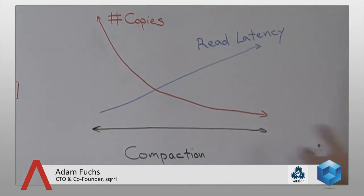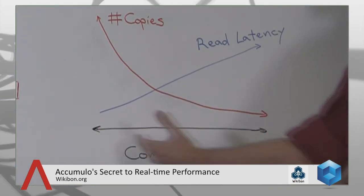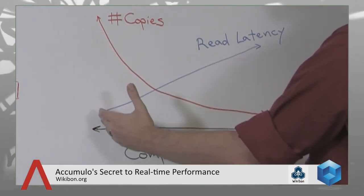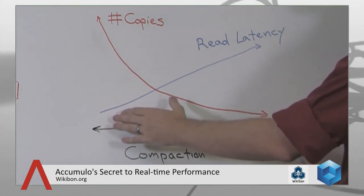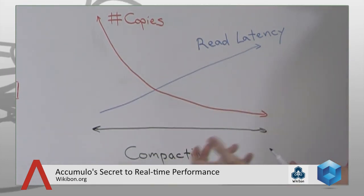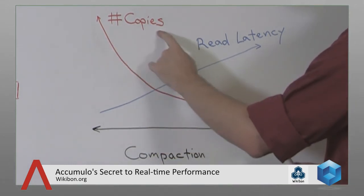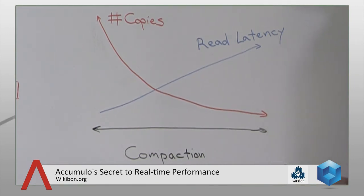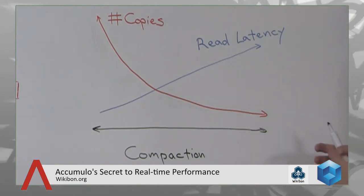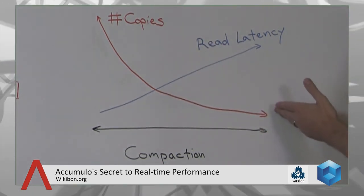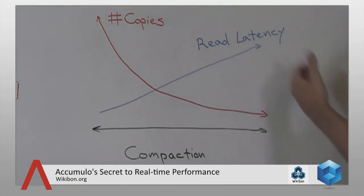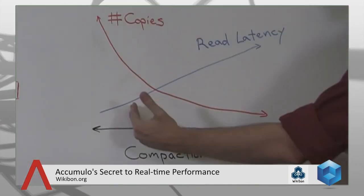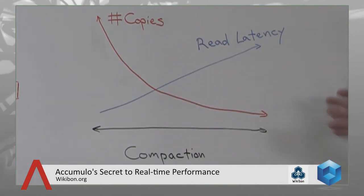Accumulo has a compaction ratio that allows us to shift between extremes. On one extreme, keeping only one file at any point minimizes read latency, but the cost is that every time data flushes to disk it must be compacted with the existing file, resulting in a large number of copies of each key-value pair rewritten on disk. The flip side is minimizing copies to reduce disk impact, but that means accumulating many intermediate R files, which impacts read latency. The compaction ratio lets you tune in between. We've optimized the default for a mix of reads and writes — bringing the number of copies down for efficient writes while keeping read latency fairly low.